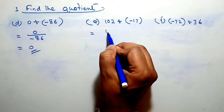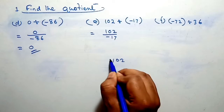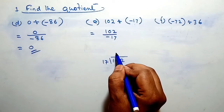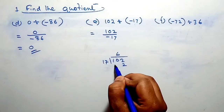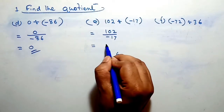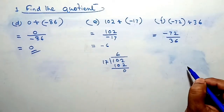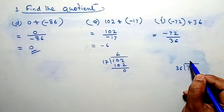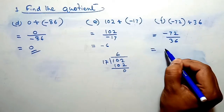Again, 102 divided by minus 17. Here we divide 102 by 17. 17 into 6 equals 102. Therefore remainder is 0. So our answer is minus 6.